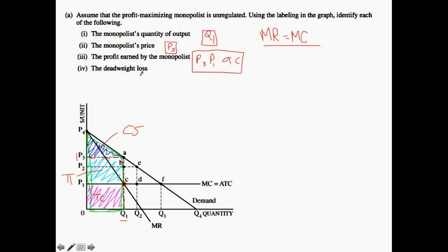So now let's think about what is the deadweight loss incurred. Here we need to understand what would be the allocatively efficient outcome, which would be price equals marginal cost. We look at where demand is equal to marginal cost, and that happens at point F. Everything above this point on the marginal cost is going to be a deadweight loss — an efficiency that is not being gained by the consumer. When price equals marginal cost, your consumer surplus would be this entire rectangle.